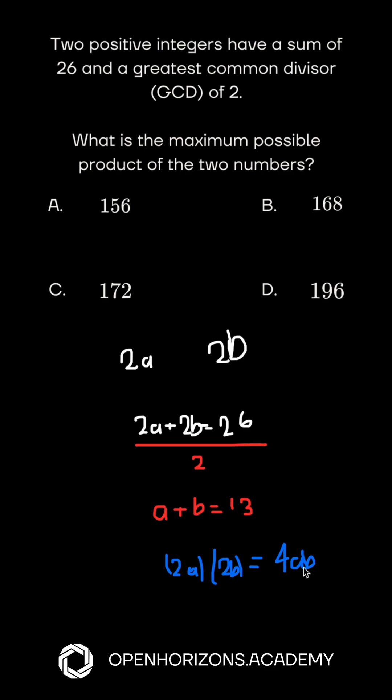Maximize AB if A plus B equals 13. Use symmetry. The product AB is largest when A equals B or as close as possible, and the closest integers that add to 13 is 6 and 7.